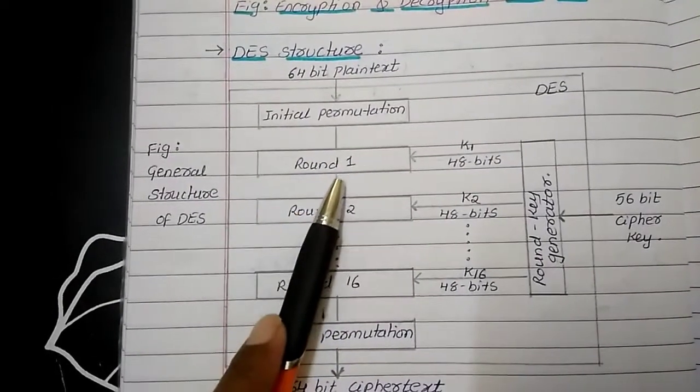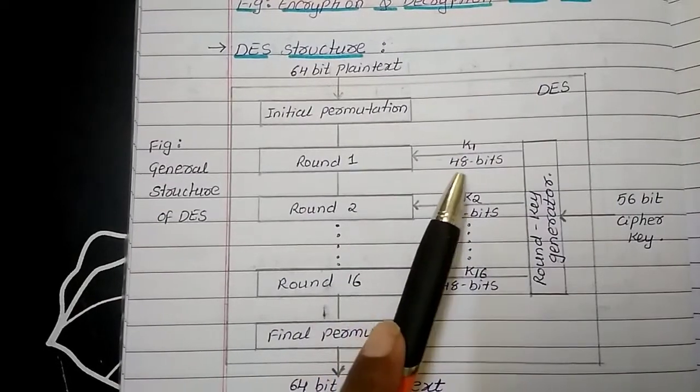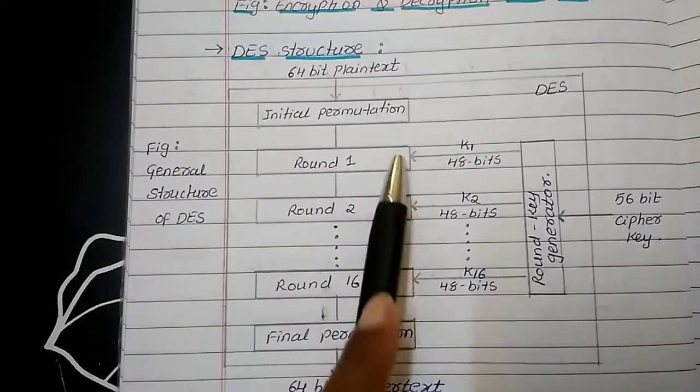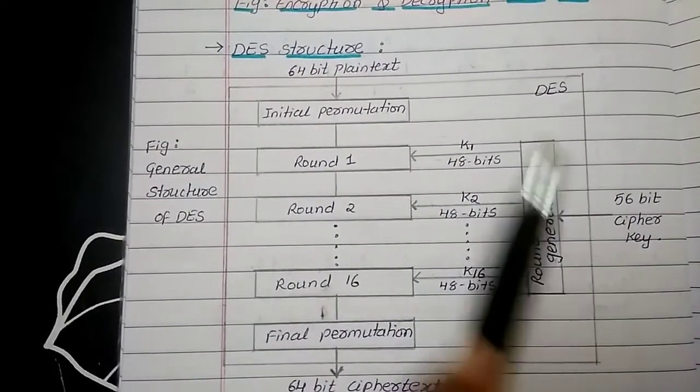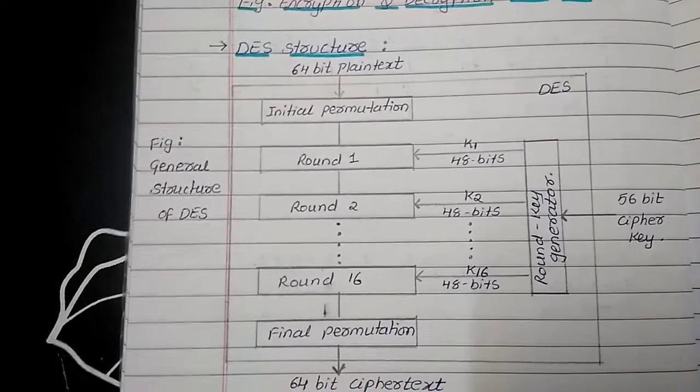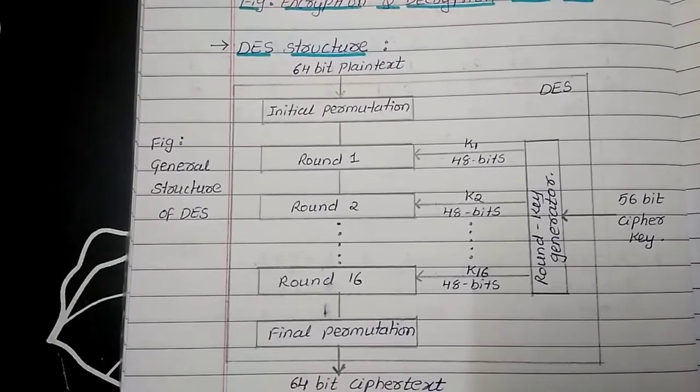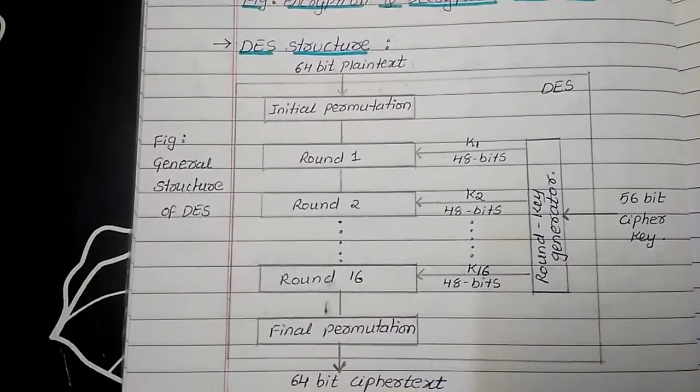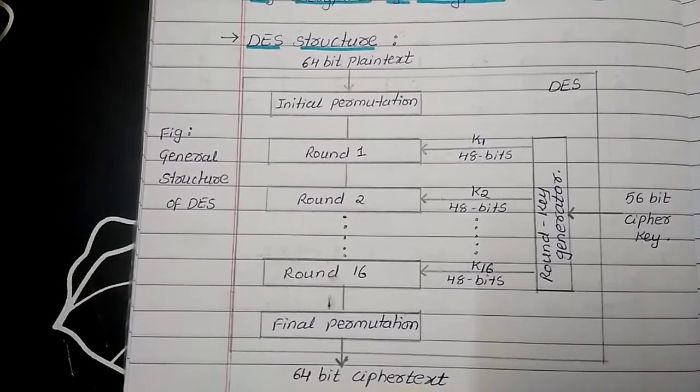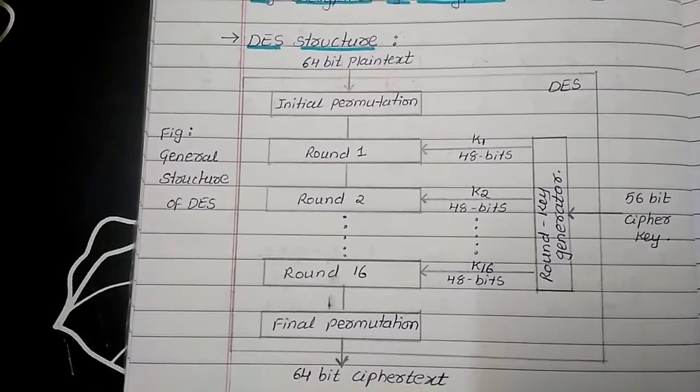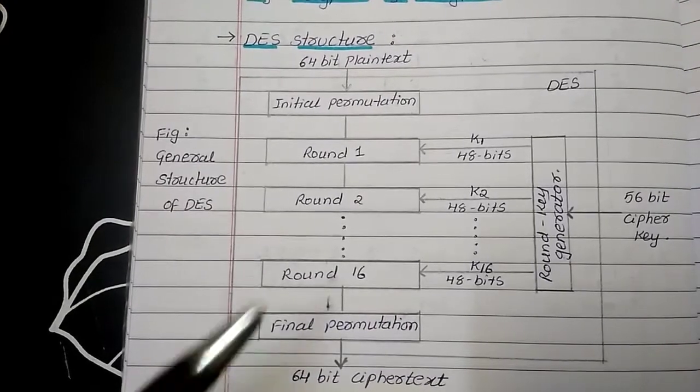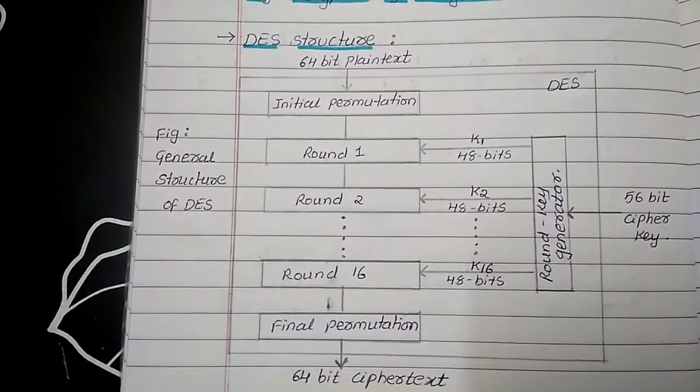As you can see, each round is having its own round key of 48 bits. And we are having round key generator which is providing key for each and every round. The cipher key will be 56-bit in nature. Now, let us see what exactly this P box is. The initial and final permutation is called as P box and each P box or each permutation is taking 64-bit input and permutes them according to some predefined rule. Now, let us see what is happening in each and every round in detail.